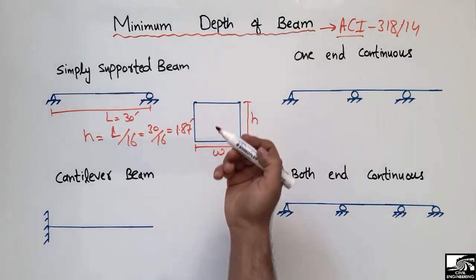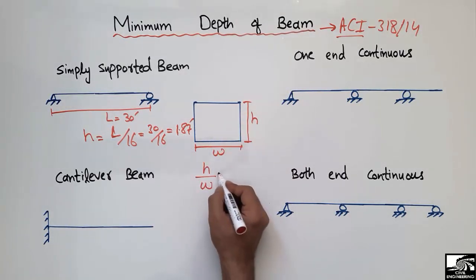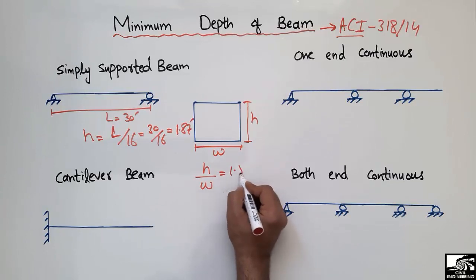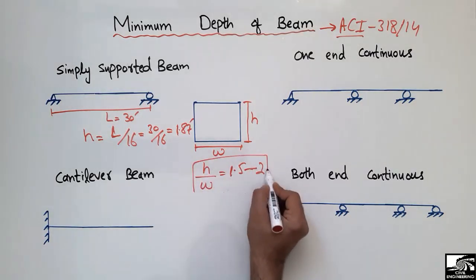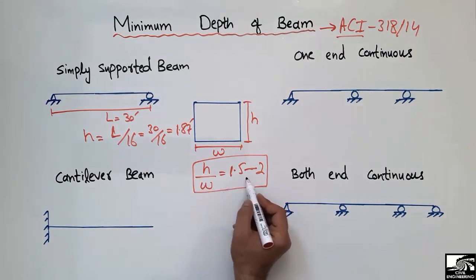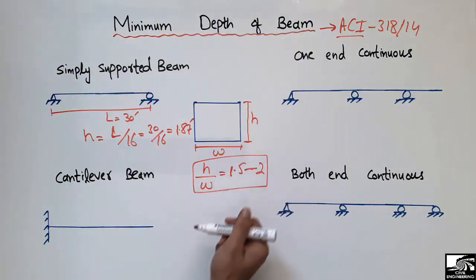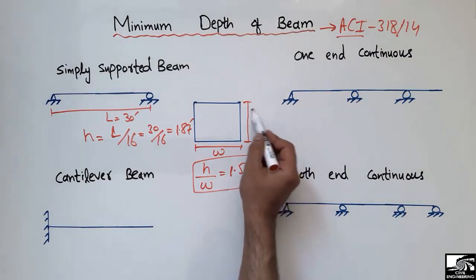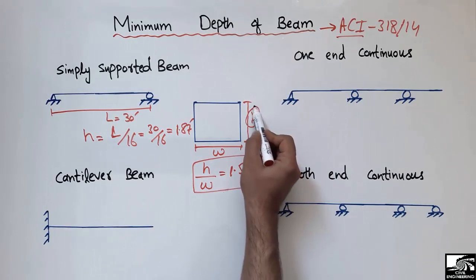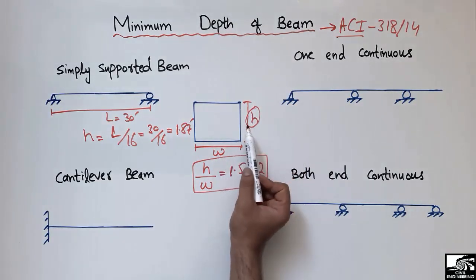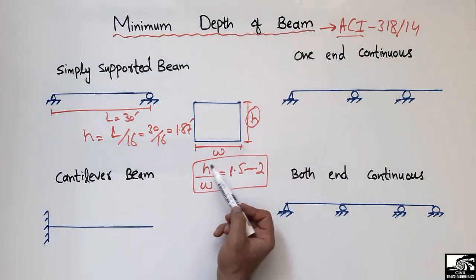The height-to-width ratio of a beam is generally between 1.5 to 2. The width is generally less than the height, because height is more important for the moment of inertia. If you have a greater height than width, you get a higher moment of inertia and thus a higher bending capacity for the beam.